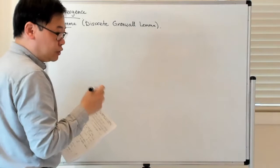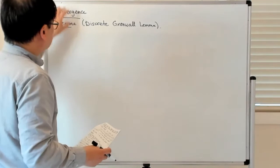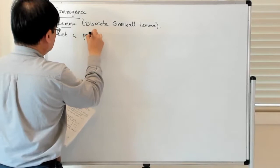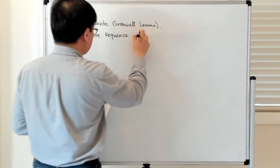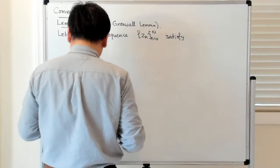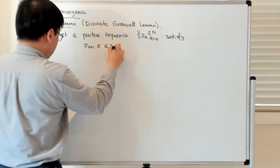Let me state the lemma abstractly, prove it, and then in the next lecture we'll see how it's actually used to establish the convergence of the Euler method. Let's say that we have a positive sequence Z_n from 0 to big N that satisfies the following inequality: Z_{n+1} is less than or equal to AZ_n + B.